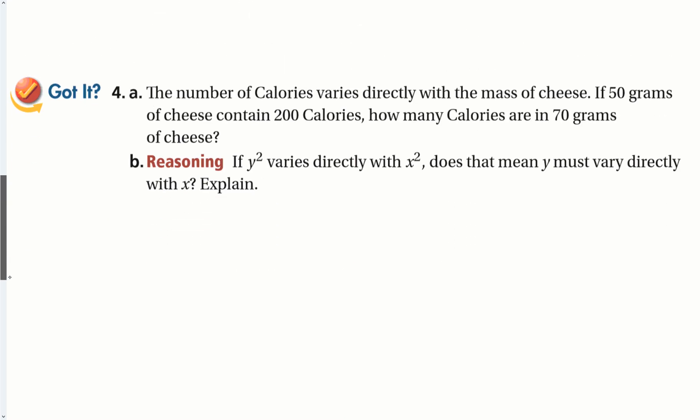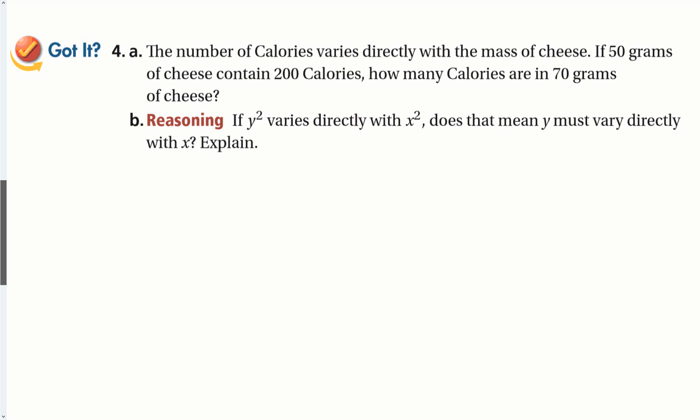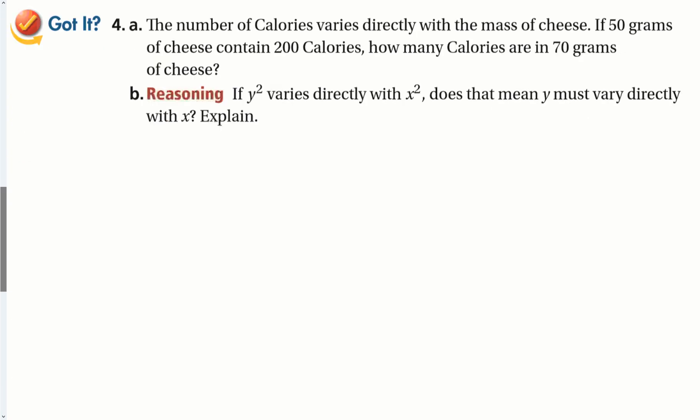Let's try the got it problems. The number of calories - they're telling you - calories vary directly with the mass of the cheese. So if 50 grams of cheese, that means y is going to be k times x. So 50 grams contain 200 calories, some constant times 50. And we get 4. How many calories are there in 70 grams? So now y is going to be 4 times 70 to give me 280 calories.